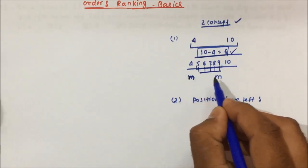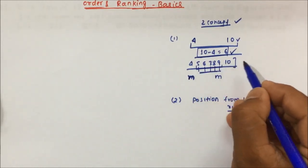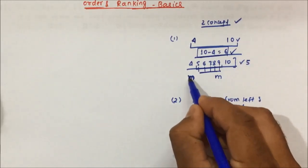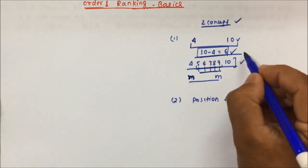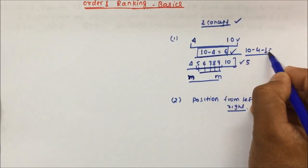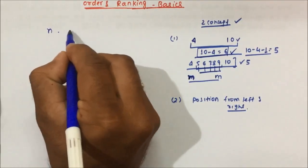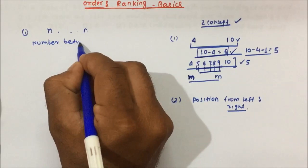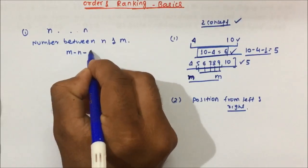So if anybody asks you in between n and m — see, from 4 to 10 we are writing down the numbers and we are able to identify that instead of 6, there are only 5 numbers in between 4 and 10. So how many numbers will be there between n and m? What we are doing is 10 minus 4 minus 1. We subtract that extra 1, then it will be 5. Numbers between n and m = m minus n minus 1.